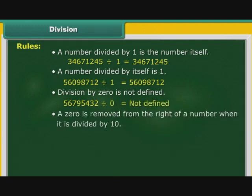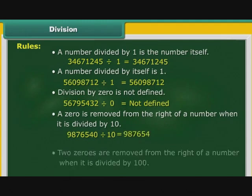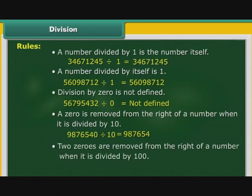A zero is removed from the right of a number when it is divided by 10 — for example, 9876540 divided by 10 is equal to 987654. Two zeros are removed when a number is divided by 100 — for example, 41236500 divided by 100 is equal to 412365.